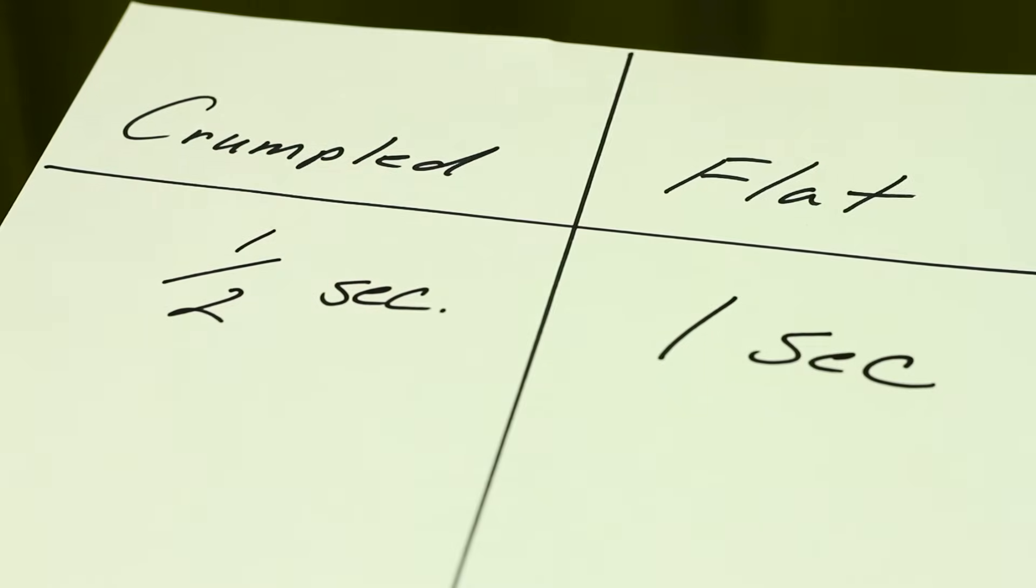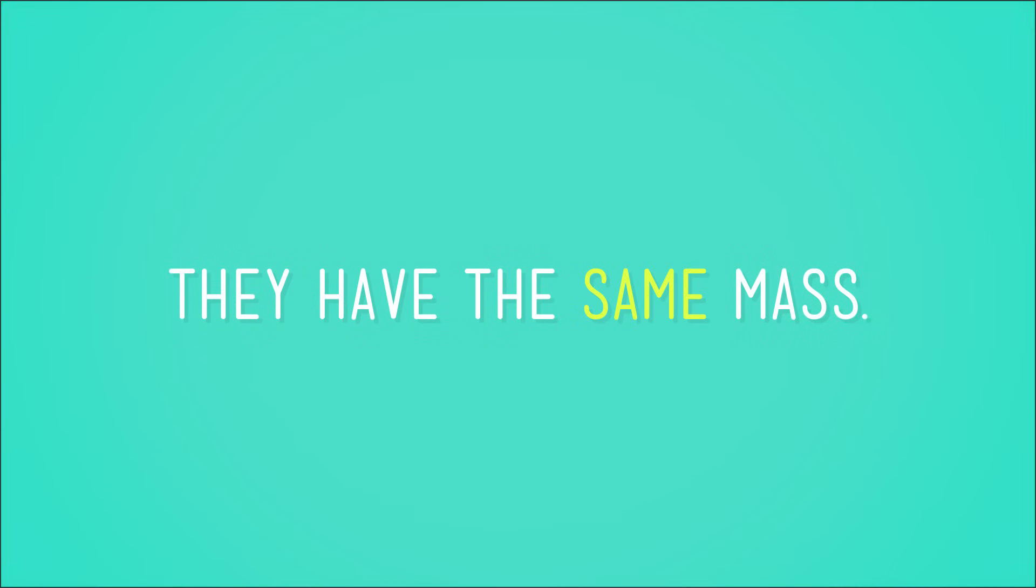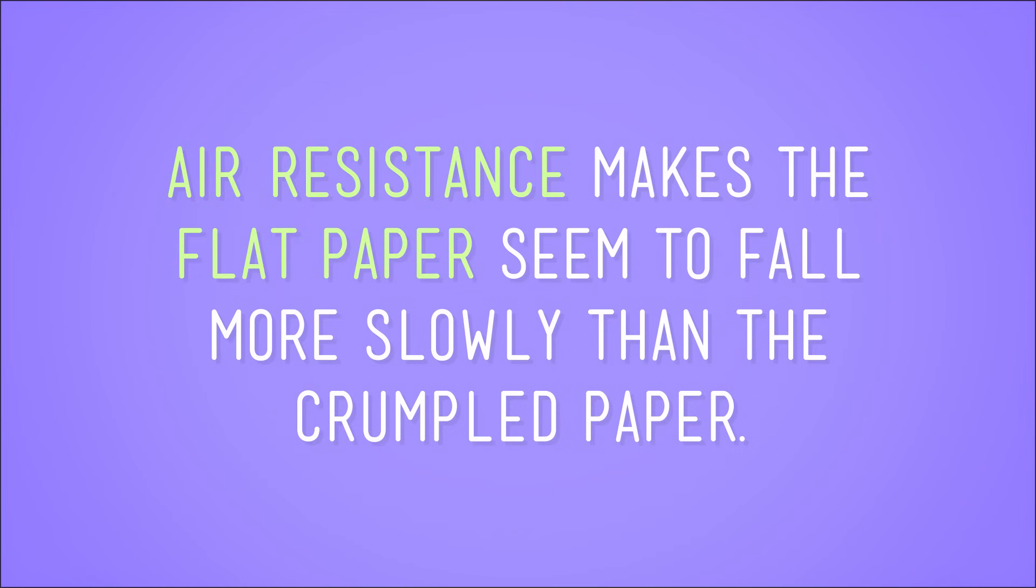You'll see it takes the flat paper longer than the crumpled paper to hit the floor. This is evidence that an object's shape affects how fast it seems to fall to Earth. Because the two pieces of paper are exactly the same. They have the same mass. But air resistance makes the flat paper seem to fall more slowly than the crumpled paper.